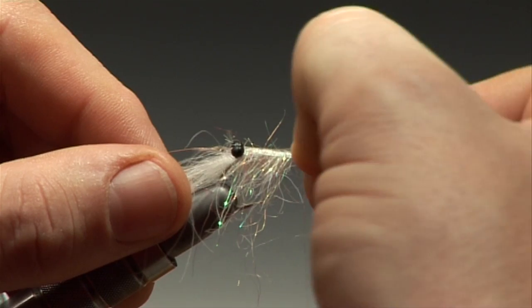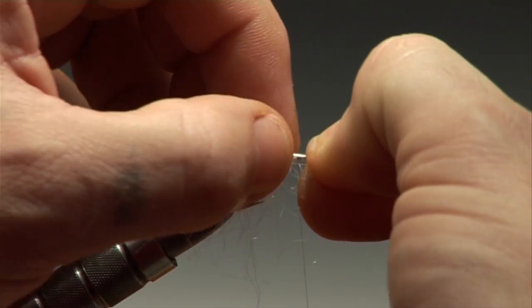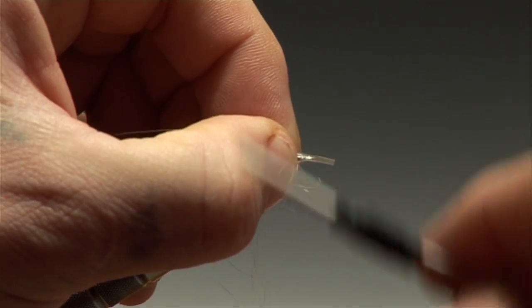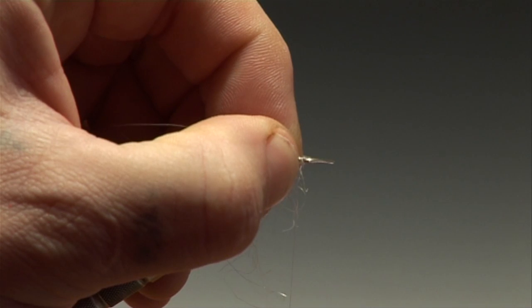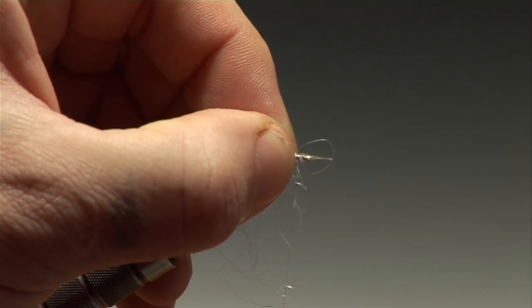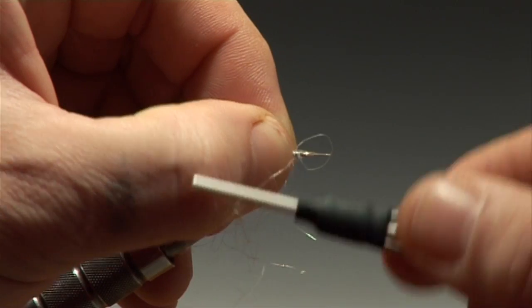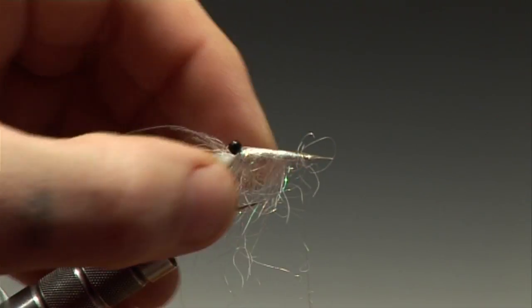Pull the shellback between the eyes. Make sure that it's central along the top of the hook and tie this in directly behind the eye. Don't worry if you catch a few fibers, that's okay.